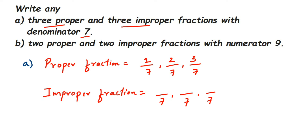Let me take 11, then 20, and then 50. It's not necessary that my answer should be the same as yours — since the question just says write any improper fraction with denominator 7, we can take any number. So 11/7, 20/7, and 50/7 are three improper fractions.